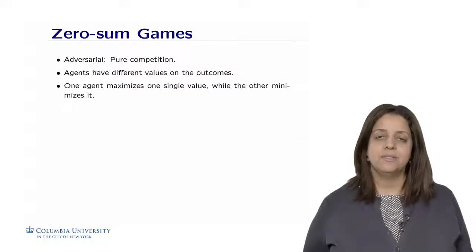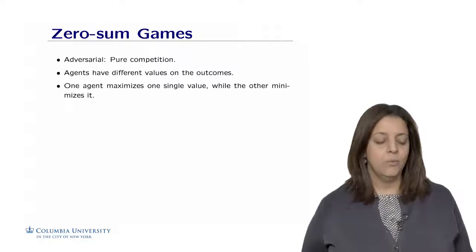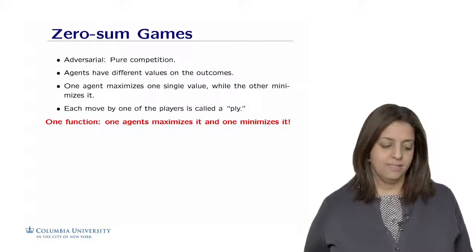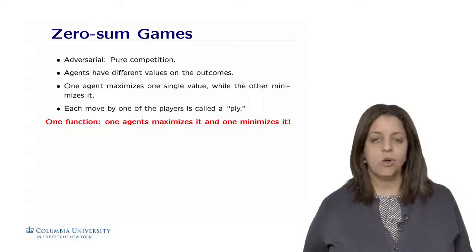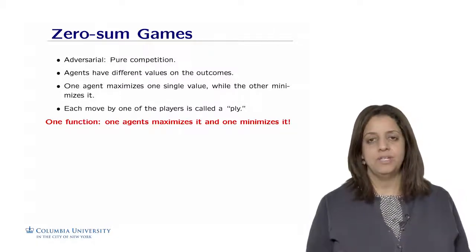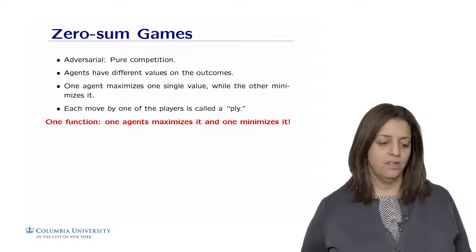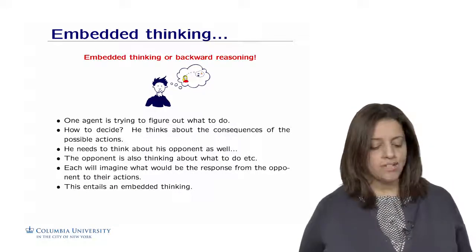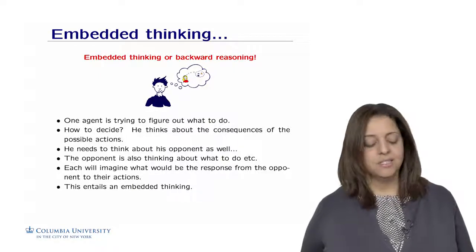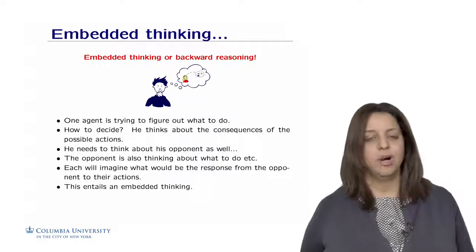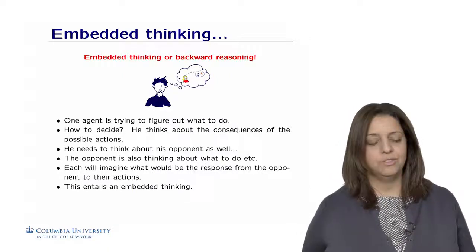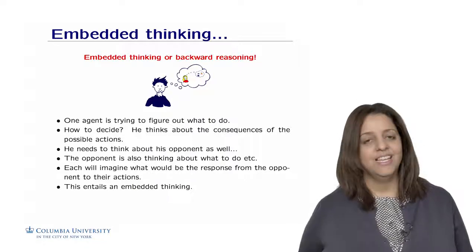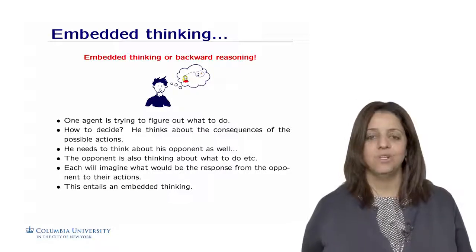We call them zero-sum games where two agents act alternately. Zero-sum games involve pure competition where agents have different values on outcomes. One agent maximizes a single value while the other minimizes it. Each move is called a ply. Zero-sum games involve embedded thinking or backward reasoning, where each agent thinks about the consequences of their actions and must consider what their opponent will do in response.